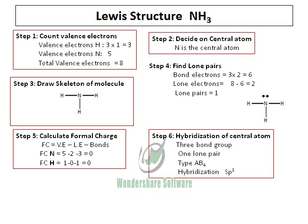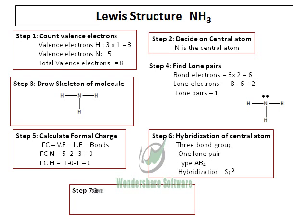A molecule with SP3 hybridization will have a tetrahedral electron domain geometry. Because of the presence of one lone pair, the molecular geometry is not going to be the same as the electron domain geometry. The electron domain geometry is tetrahedral, and the molecular geometry — the shape of the molecule — is called trigonal pyramidal.